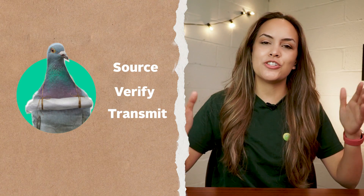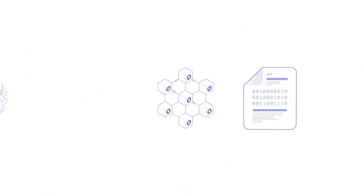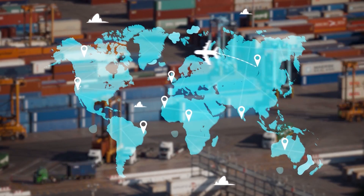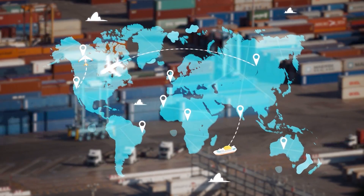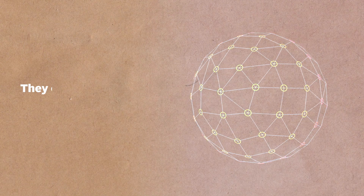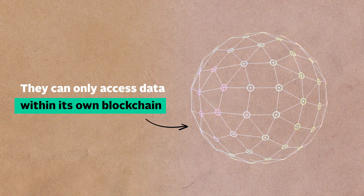You can think of blockchain oracles as a secure bridge between blockchains and the real world. Oracles are like messengers — trusted external services that can source, verify, and transmit data from the outside world to smart contracts on a blockchain. They enable smart contracts to interact with off-chain data and fulfill real-world use cases such as supply chain management. Without oracles, the use cases for smart contracts would be substantially limited.